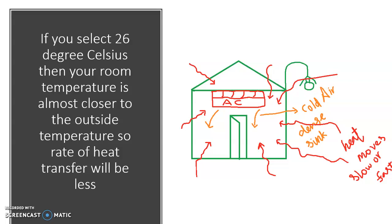If you reduce the temperature difference, heat energy will not enter your room as fast, so the AC gets more rest, the pump gets rest, and the air conditioner does not function all night. You will not consume as much electrical energy and you will pay a lower electricity bill, saving a lot of money — and no need to call a technician often. Select 26°C instead: it is comfortable for sleeping, and with outside at 30°C, the difference is only 30 minus 26 equals 4°C — a small temperature difference, so the rate of heat energy transfer is much less.